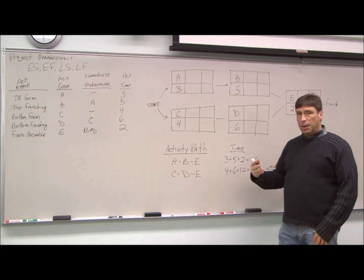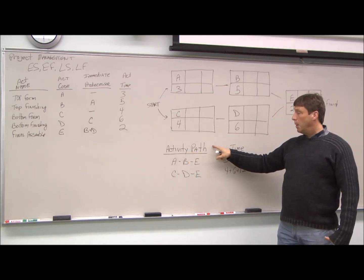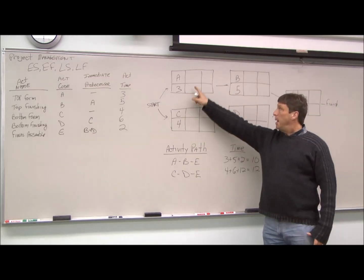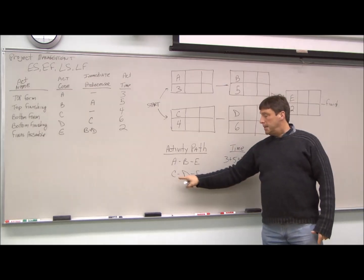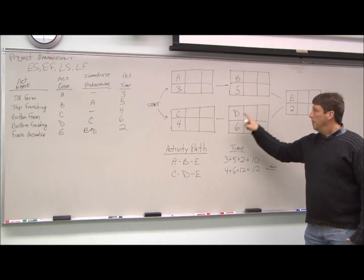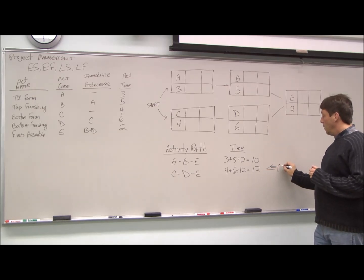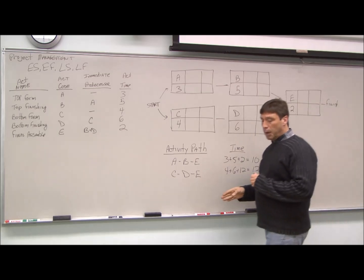From that, we've seen previously with PERT, we can chart our activity path and see how long it takes. So my path ABE is going to take ten weeks, my path CDE is going to take twelve weeks. So CDE will be my critical path here, and the critical path is twelve weeks.